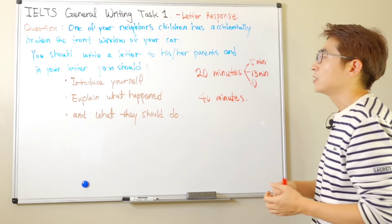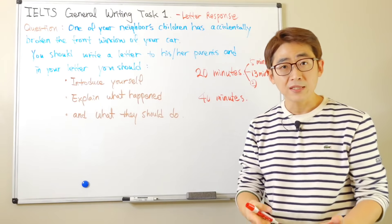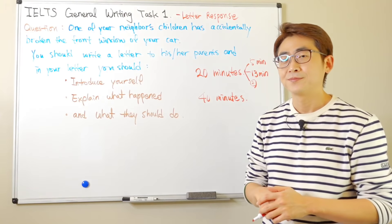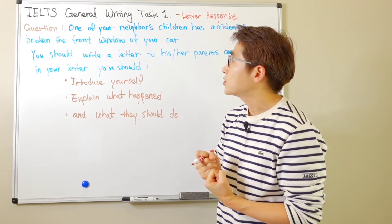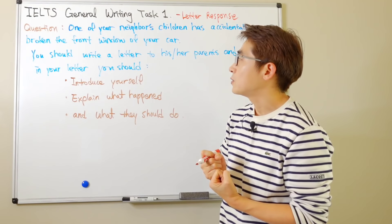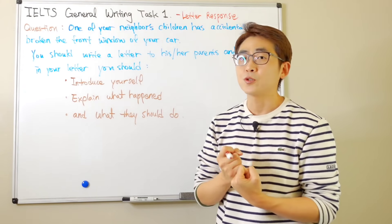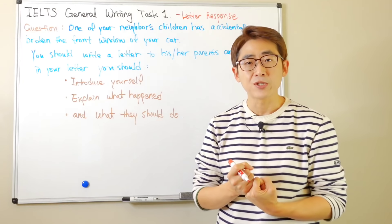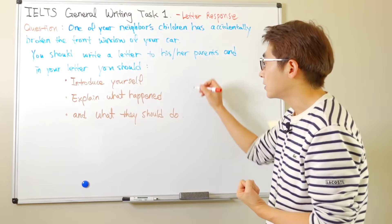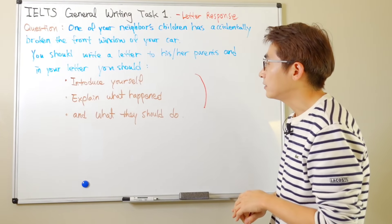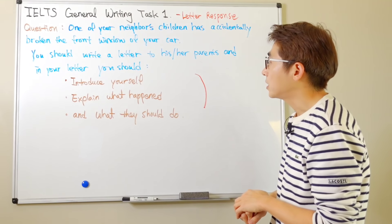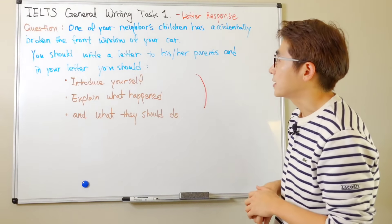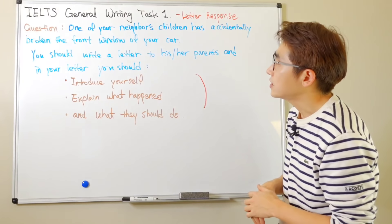Let's look at the question and brainstorm together, look at our template, and then write the band 9 essay together. As soon as you look at the question there are a few things that we need to do: analysis of the question, figure out the key information, figure out what we are going to cover in our letter, and also some detailed information for the question.